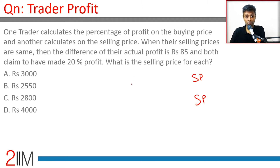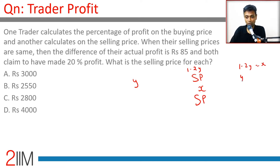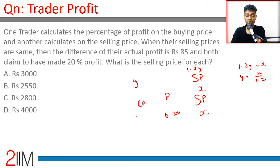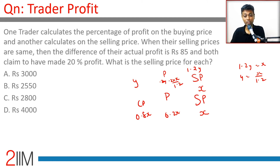In one instance the selling price is x. The first guy says: if cost price were y, selling price would have been 1.2y, so 1.2y = x, meaning y = x/1.2. The second guy says his selling price is x and his profit is 0.2x, so his cost price is 0.8x. For the first guy, the profit is 0.2 × (x/1.2), which equals x/6.